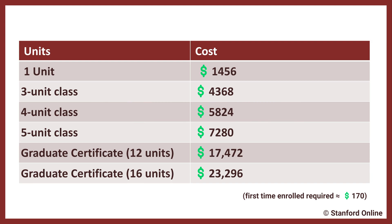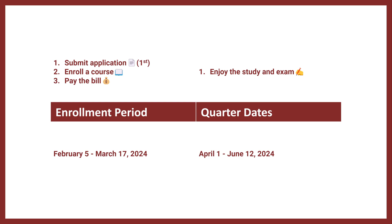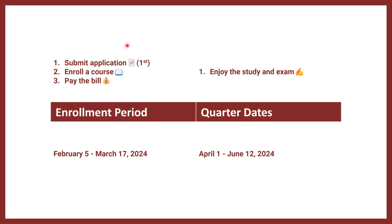After completing the graduate certificate you can apply those credits toward a master's degree. You also need to pay a $170 application fee upfront. The timeline is divided into two periods: the enrollment period and the quarter dates. During the enrollment period you only need to do three things — submit your application, enroll in a course, and pay the bill. The application submission is a one-time step.